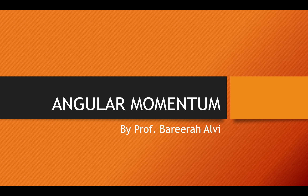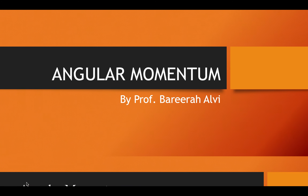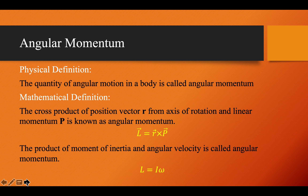Now we have to discuss angular momentum — the momentum of a particle that is moving along a circular path. First, the physical definition: the quantity of angular motion in a body is called angular momentum. Mathematically, the cross product of position vector r from the axis of rotation and linear momentum p is known as angular momentum.